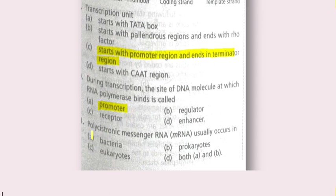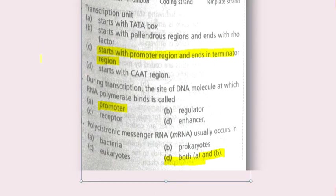Last question: polycistronic mRNA usually occurs in bacteria, prokaryotes, eukaryotes, or both A and B? The answer is both A and B — that is, bacteria and prokaryotes — because in eukaryotes the monocystronic condition is present, while in prokaryotes the polycistronic condition is present. That's sufficient for now; we will discuss more in the next upcoming videos. Be in touch and goodbye.